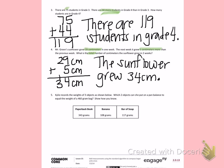Number 5. Kylie records the weight of three objects as shown below. Which two objects can she put on a pan balance to equal the weight of a 460 gram bag? Show how you know. So I have three objects below, but I can only use two of them to equal 460 grams. I'm going to start by adding the paperback book and the banana to see if they equal 460 grams.